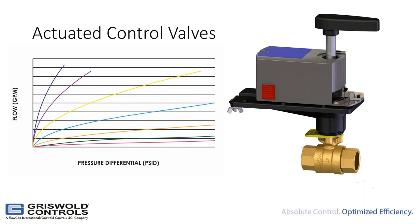Simply put, an actuated valve controls how much flow goes to a coil or terminal unit. Each coil has a control valve with some kind of electronic actuator — typically nowadays it's an electronic actuator on the valve with a motor that controls the valve position. The actuator receives a signal from the thermostat in the room or from the control system, which simply tells the valve to rotate to a more open or more closed position.